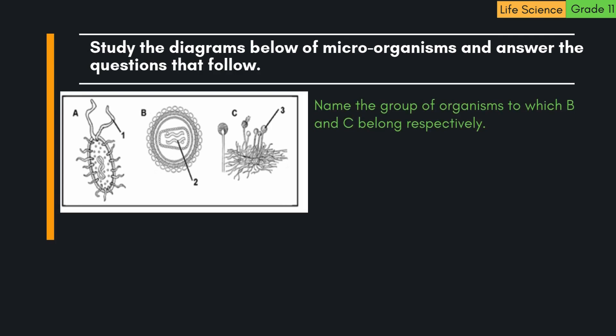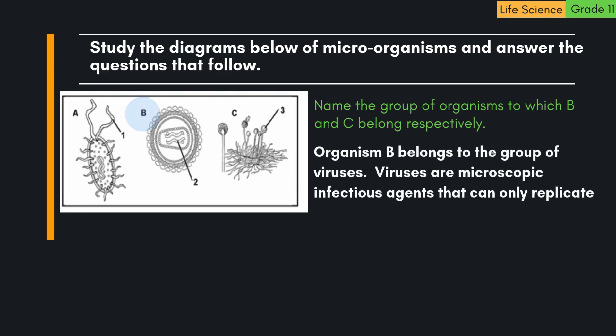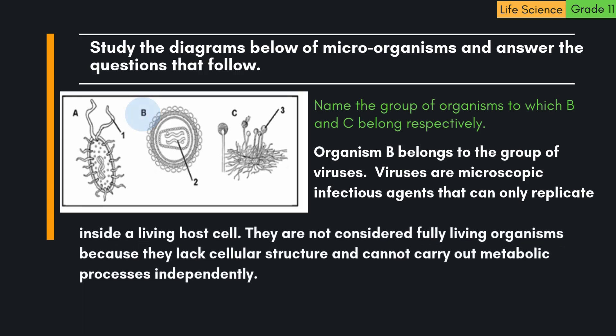Name the group of organisms to which B and C belong respectively. Organism B belongs to the group of viruses. Viruses are microscopic infectious agents that can only replicate inside a living host cell. They are not considered fully living organisms because they lack cellular structure and cannot carry out metabolic processes independently.